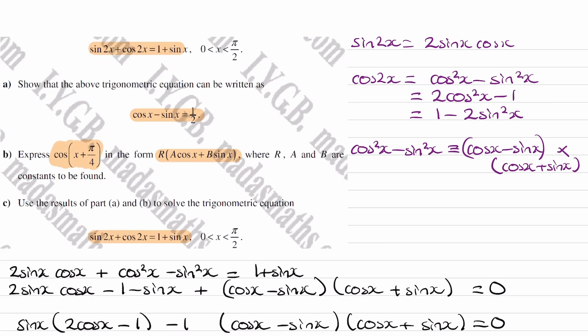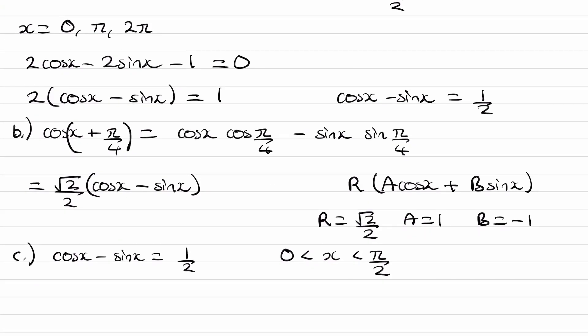And then we had worked out that cos of(x + π/4) is equal to this. So we're going to be using this equation. Cos(x + π/4) is equal to √2 over 2 times cos x minus sin x. We have cos x minus sin x over here. We can then replace this with what we have here divided by √2 over 2. So just rearranging that equation. cos x minus sin x, rearranging the equation on the right-hand side, that's equal to 2 over √2 times cos(x + π/4).